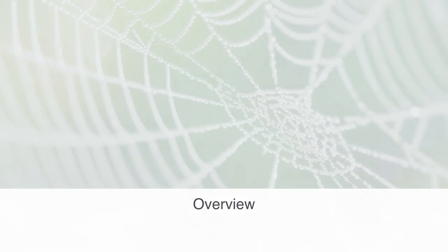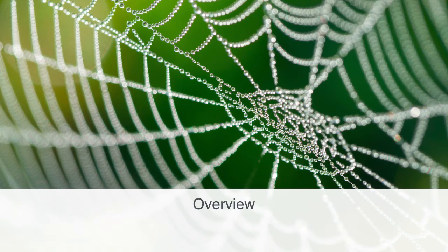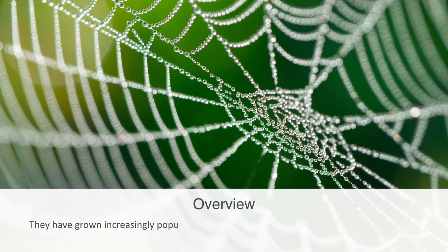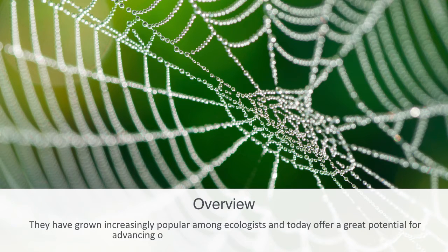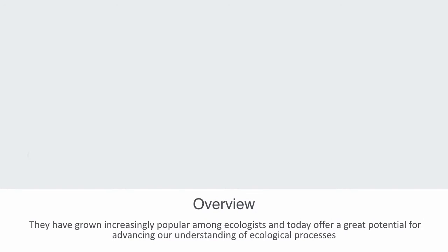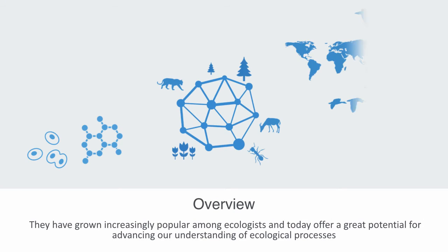Up until now we've been talking about ecosystems as networks through which energy and resources flow, but in this module we'll be defining more clearly what we mean by this as we talk about ecological networks — an active area of research within contemporary ecology. Since the 1970s, when networks were imported from physics and the social sciences into ecology, they have grown increasingly popular among ecologists, offering potential for advancing our understanding of ecological processes from metabolic networks in our cells to food webs within an ecosystem to global networks of animal migration.